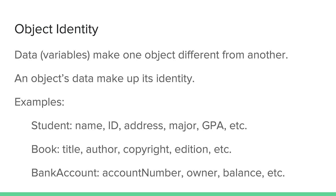Let's start by talking about what makes up the identity of an object. When we write a class that's used as the blueprint for creating objects, we define a certain set of data or variables that make up the identity of an object. These are the pieces of information that make one object different from another. Put together, those data, those variables, are the identity of the object — the state of the object.